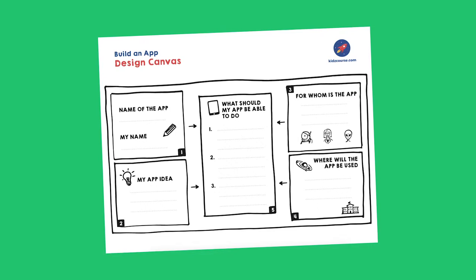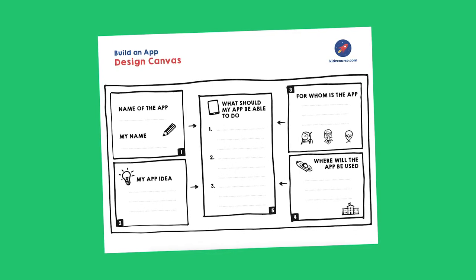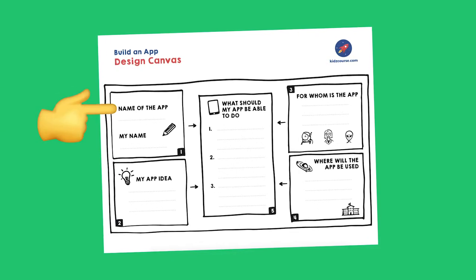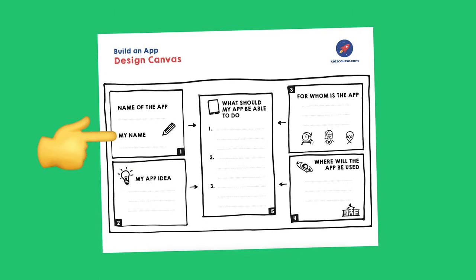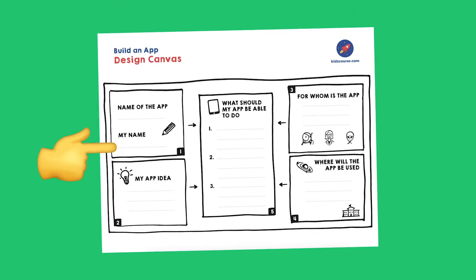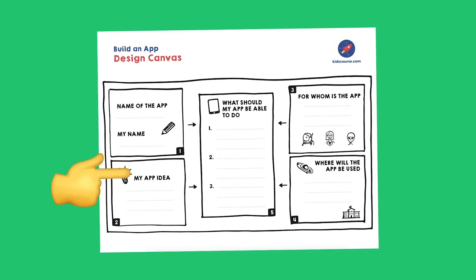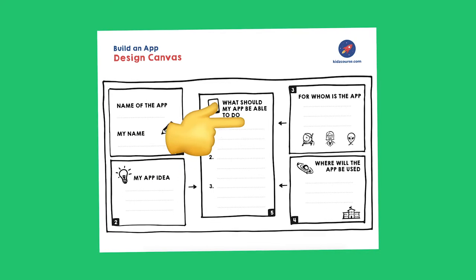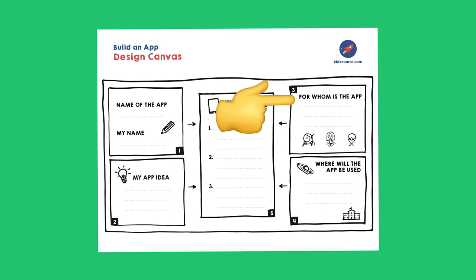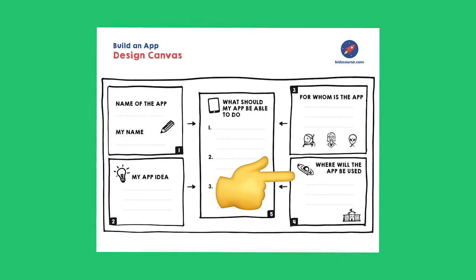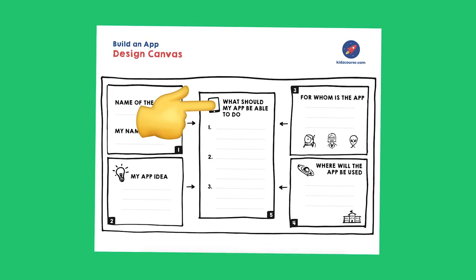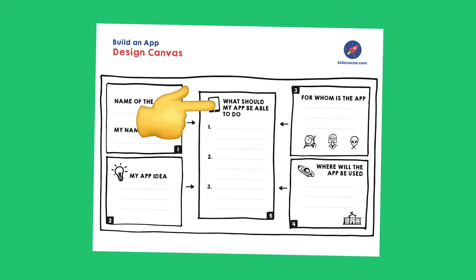Look at this. It consists of five parts: the name of your app and your own name — the designer; the idea that you have for an app and what your app does; then in the top right-hand corner, who your app is intended for; underneath that, where will your app be used; and in the center, the fifth part — what can your app do, or what is the functionality?